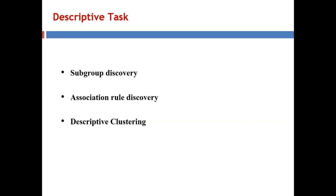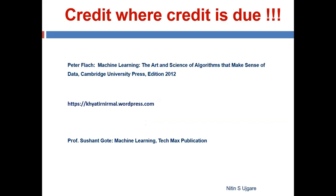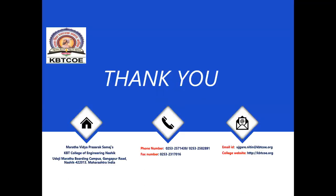That concludes this third video. We have talked about the positive and negative class, the ingredients of machine learning, supervised and unsupervised machine learning tasks, the two broad categories of machine learning tasks, and how predictive tasks — like classification, regression, and clustering — and descriptive tasks — like subgroup discovery, association rule mining, and descriptive clustering — are accomplished using predictive and descriptive modeling. I hope you enjoyed this video. Please refer to the references provided. Thank you for watching, and see you in the next video.